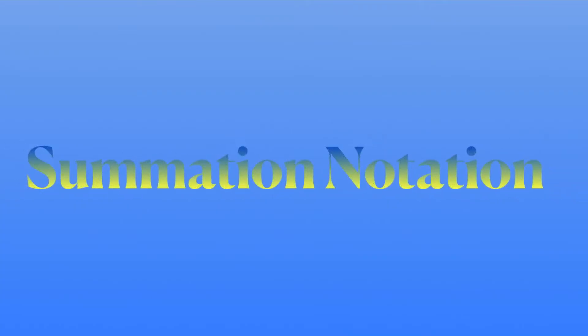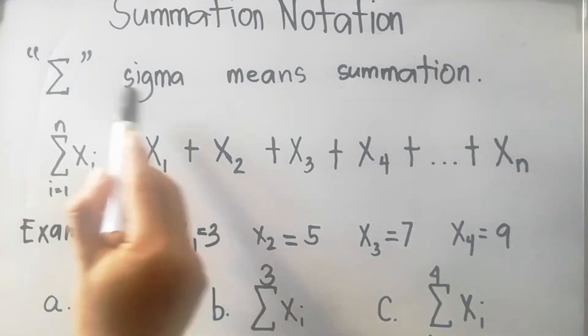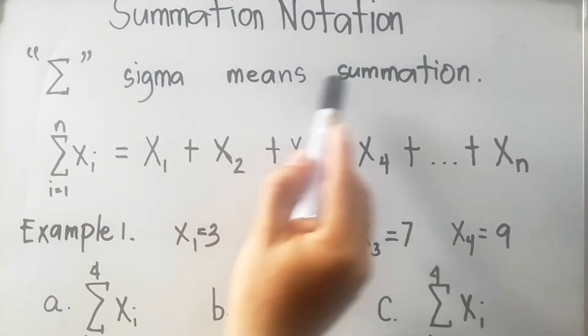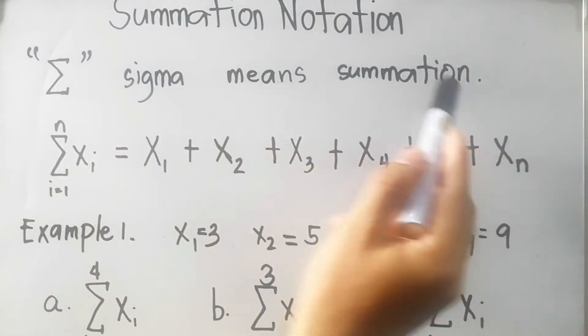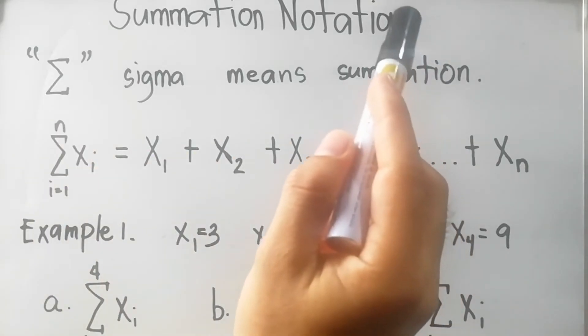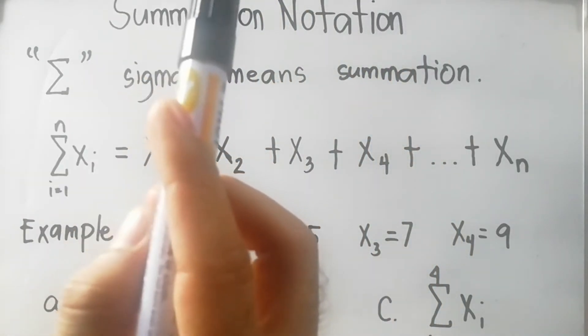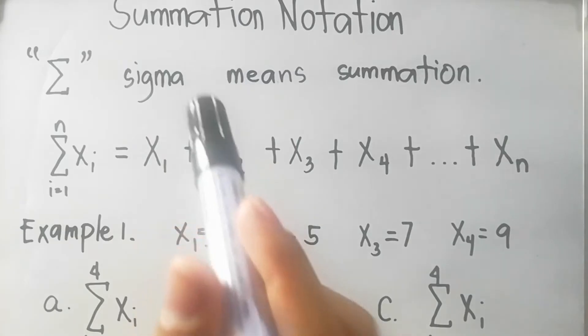Hi everyone, welcome back to my YouTube channel. Today we will talk about summation notation and the expanded form and its rules. The symbol sigma means summation. It is very important in finding the measure of central tendency, especially in finding the mean.